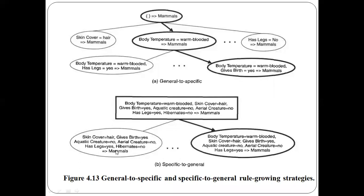In the specific-to-general strategy, we remove a conjunct at each step. Once we remove a conjunct, we get a more general rule that covers more examples. For instance, we remove 'hibernate equals no' from the rule — that conjunct is no longer present — making the rule more general.